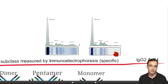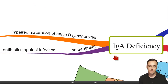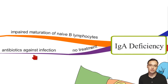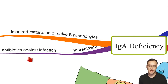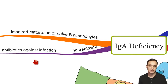So we can see a reduced number of gamma globulins. Unfortunately there is no specific treatment, but you can treat the infections with antibiotics. Some patients will typically recover over time as IgA levels tend to increase on their own, but others will not, so antibiotic treatment remains important.